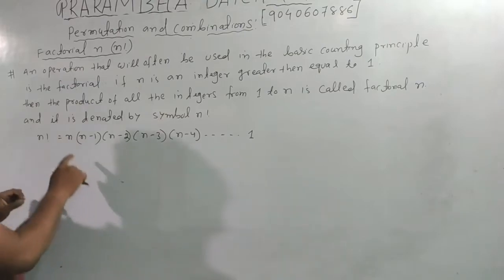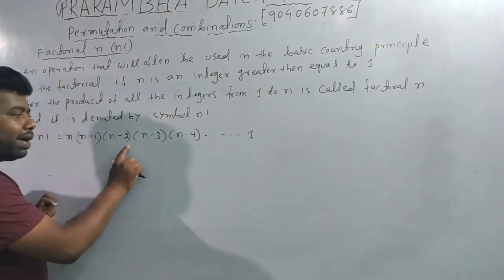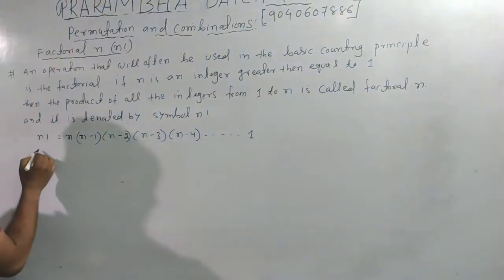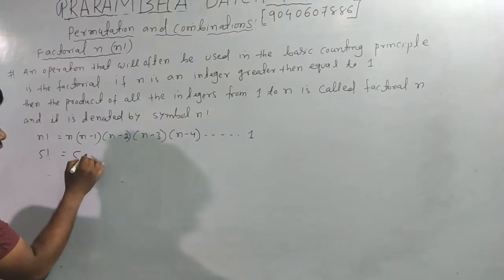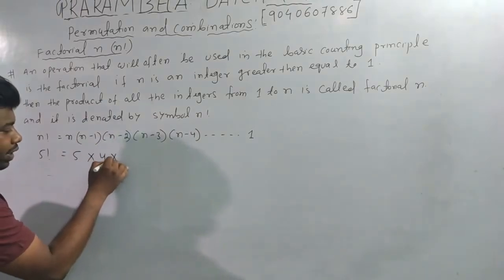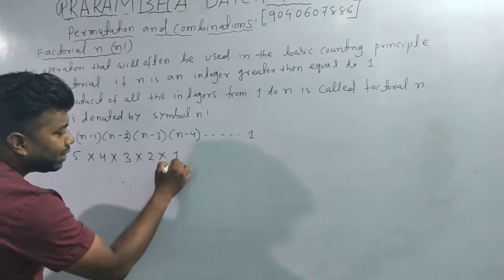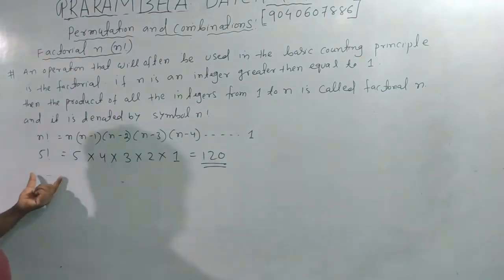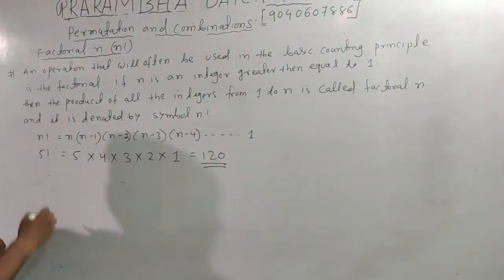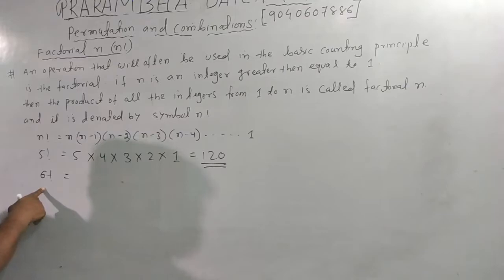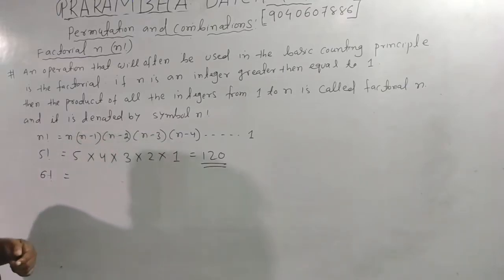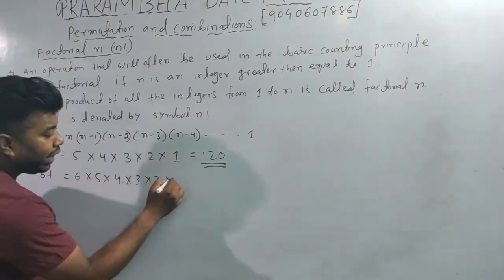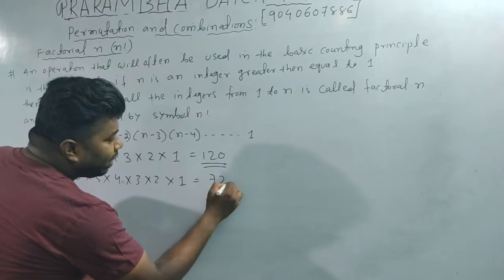The formula is: n factorial = n × (n−1) × (n−2) × (n−3) × ... × 1. For example, 5 factorial = 5 × 4 × 3 × 2 × 1 = 120. Next, 6 factorial = 6 × 5 × 4 × 3 × 2 × 1 = 720.